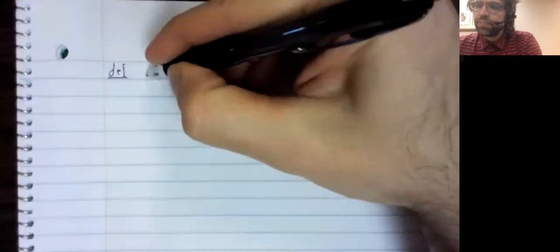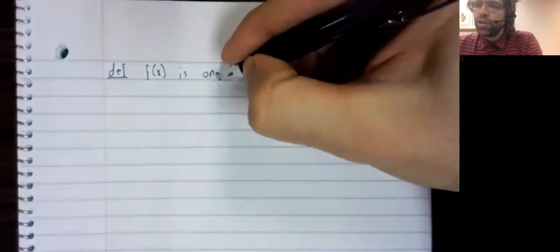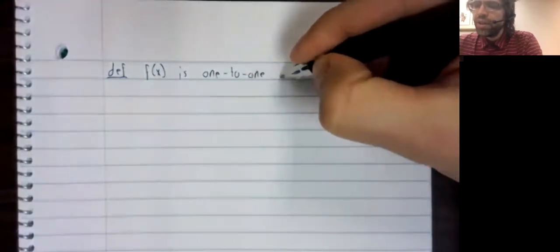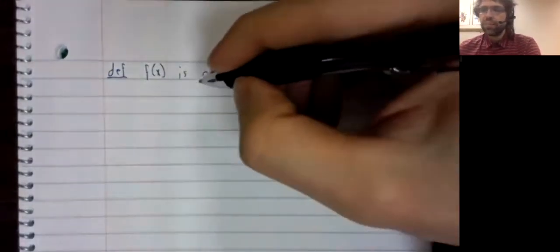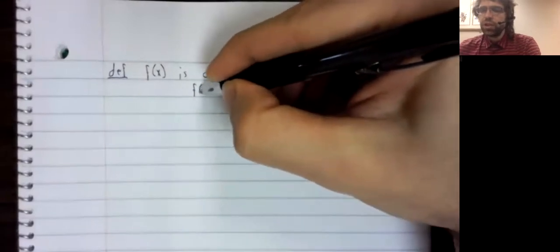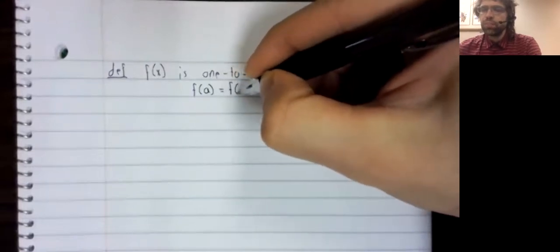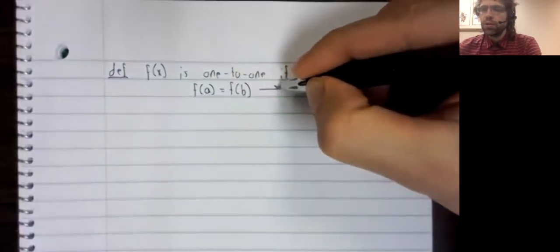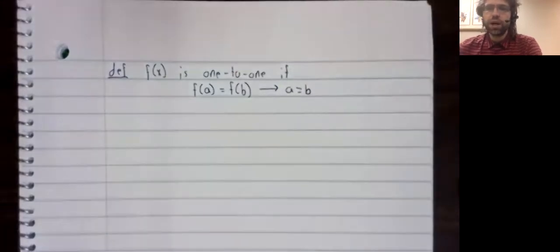A function is one to one if the situation I just described doesn't happen. The only way that two outputs can be equal is if the inputs are equal.